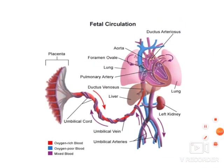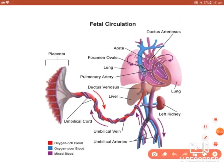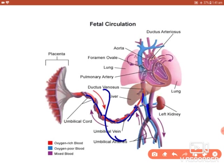Now for the fetal circulation pathway: oxygenated blood from the placenta travels to the fetus through the umbilical vein and unites with the inferior vena cava. At the level of the ductus venosus, mixing of oxygenated and deoxygenated blood occurs, but most oxygenated blood goes to the liver. From there, blood enters the right atrium, and then passes directly to the left atrium through the foramen ovale — not to the right ventricle — because respiration has not started.